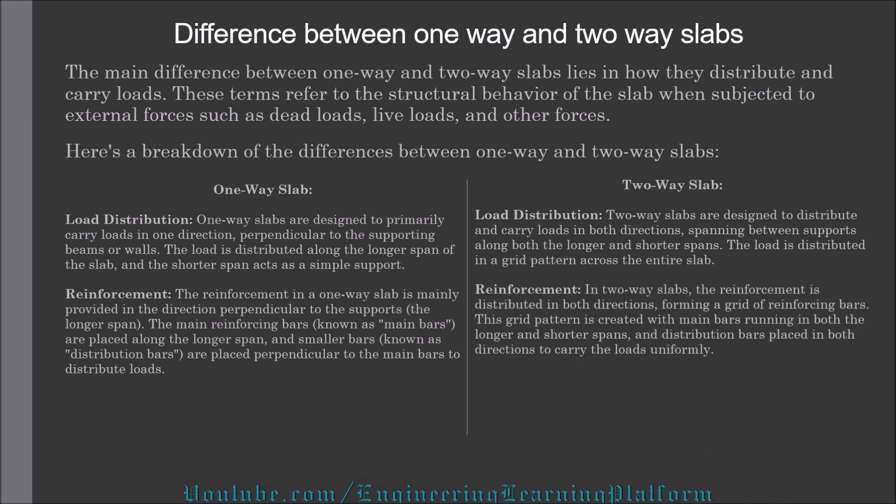In two-way slabs, the reinforcement is distributed in both directions, forming a grid of reinforcing bars. This grid pattern is created with main bars — sometimes referred to as mesh — running in both directions, longer and shorter span. Distribution bars are also placed in both directions to carry the load uniformly.